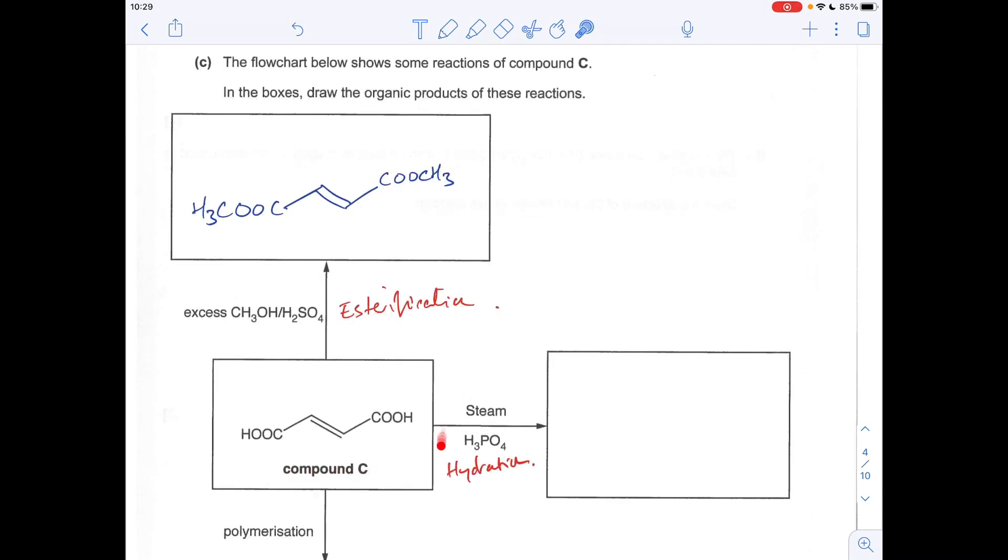Compound C with steam and phosphoric acid catalyst. So that's a hydration reaction. So in other words, we're going to add water across this double bond. So H on one carbon, OH on the other carbon. And because this is symmetrical, it doesn't matter which way around you do it. So that's what you'd get there.